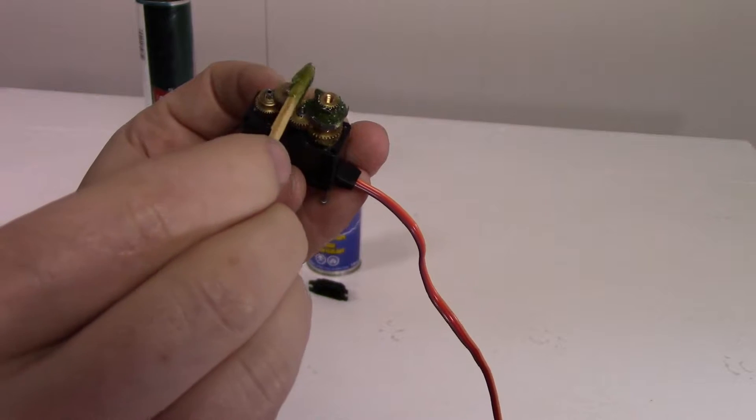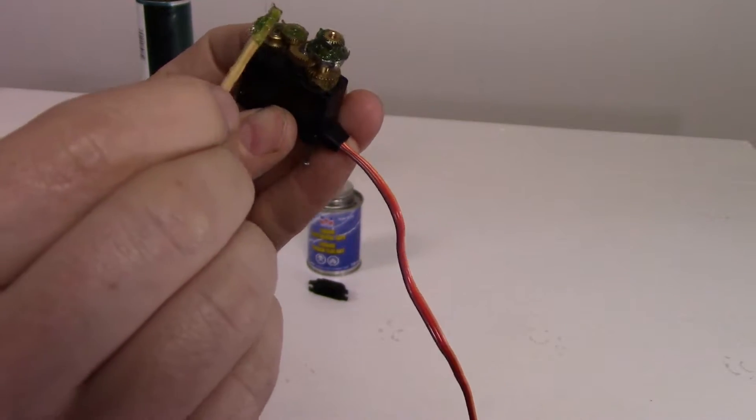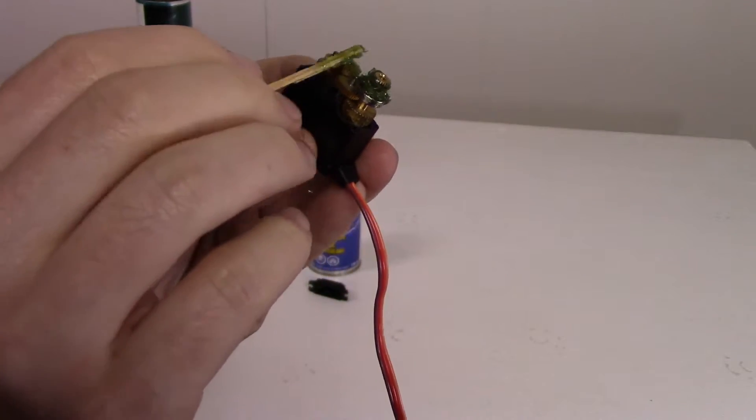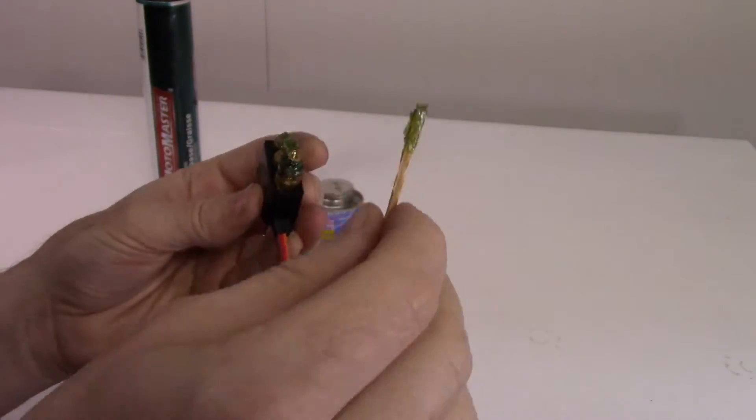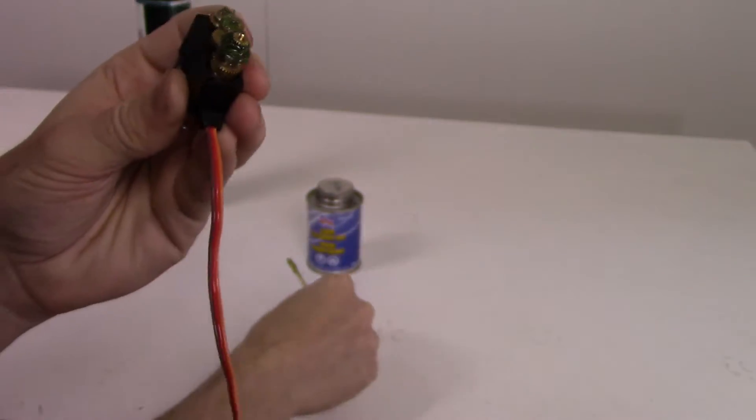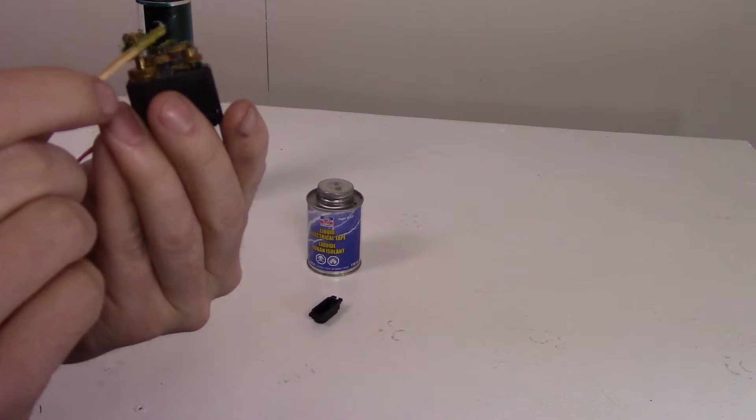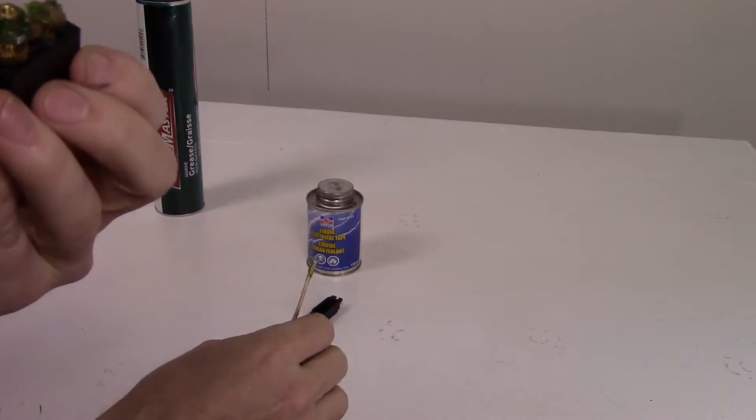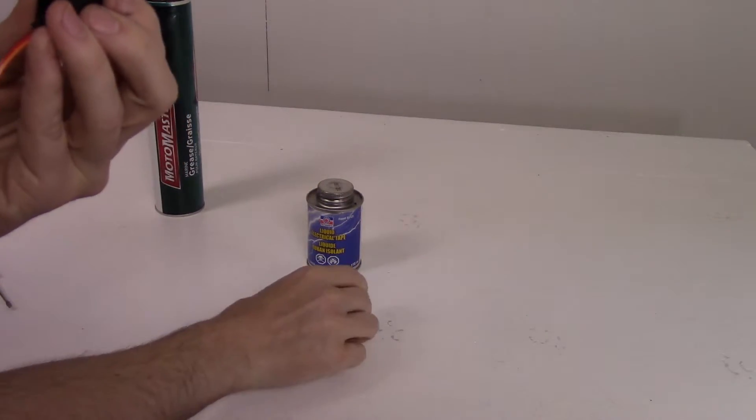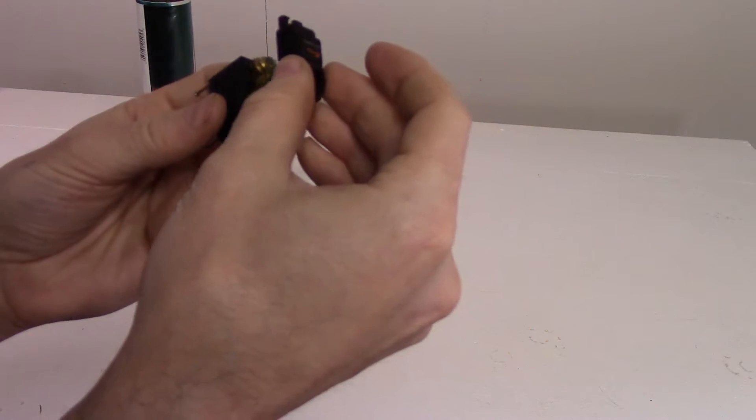You're going to want to add a little bit more grease to some of the other pieces too. This is the most important part for keeping any water from coming into that little hole and getting into the gear case area. Once you've got that nicely covered up, we can put the top piece back on.